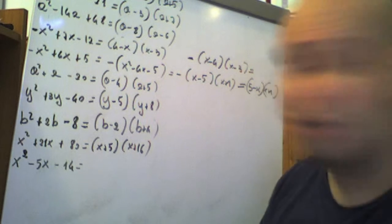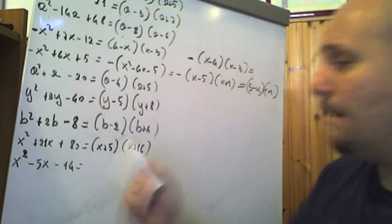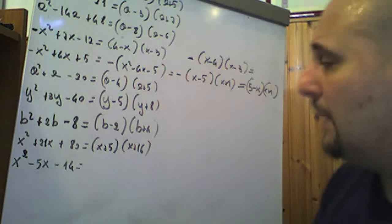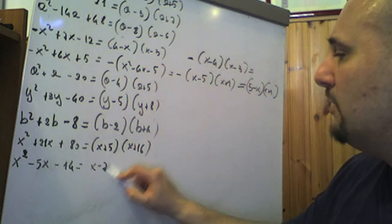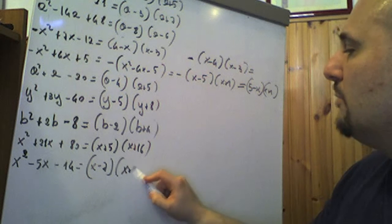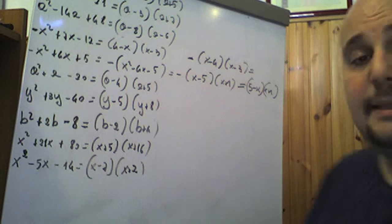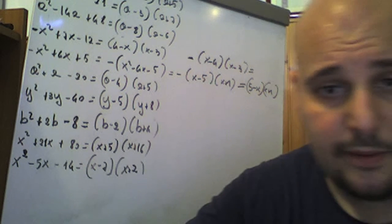X² − 5x − 14: abbiamo che −7 + 2 = −5 e −7 × 2 = −14. Quindi (x − 7)(x + 2) è l'ultima scomposizione di questo trinomio notevole x² − 5x − 14. Andiamo avanti.